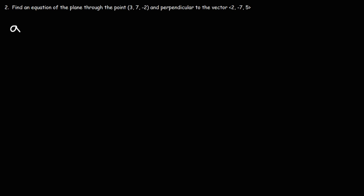So let's begin. Let's begin by identifying the values. So we have our normal vector, which means that A is 2, B is negative 7, C is 5. And then we have the point that is on a plane. So X0 is 3, Y0 is 7, Z0 is negative 2.